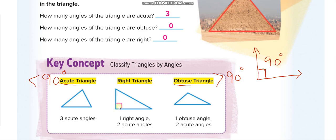Whenever you have a right angle in your triangle — 90 degrees — it is shown with a small square symbol. You can also use a D-shaped protractor to check. If the line forms a straight corner it is 90 degrees; if it opens wider it is more than 90, and if it opens narrower it is less than 90. A triangle with one right angle is called a right triangle.